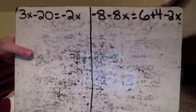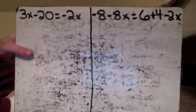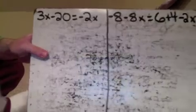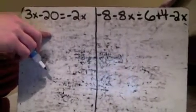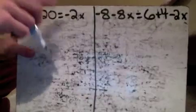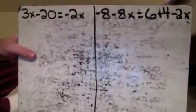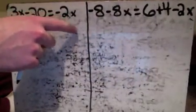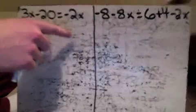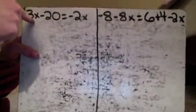All right, let's take a look. The first one here, nothing that we can combine together because I've got an x and a regular number and then my other x is on the other side. The thing that would make the most sense here is to get all my x's over here because I don't have anything else to get rid of on the side. If I can get rid of this 3x and get it over there then I've got a pretty standard problem.